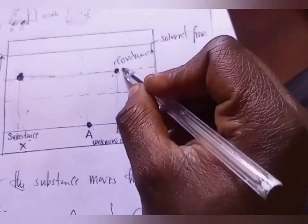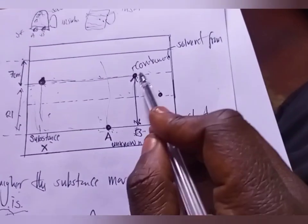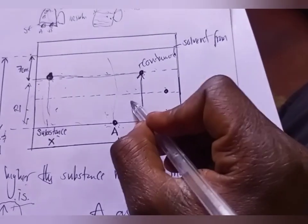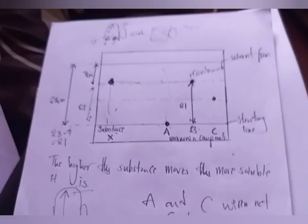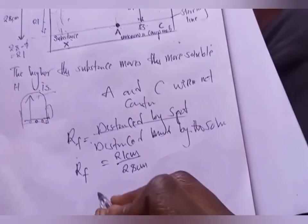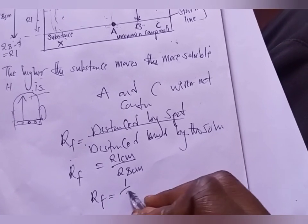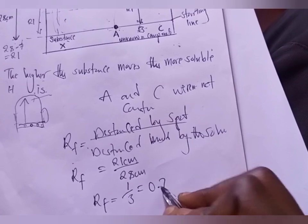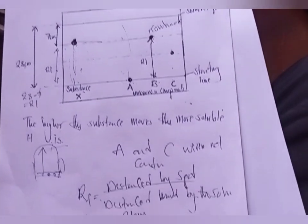So for substance B, you calculate the RF value: the distance moved by spot B is 21, and the total distance moved by the solvent is 28. Therefore, RF = 21 divided by 28, which gives an RF value of 0.75.